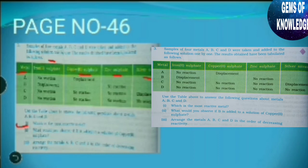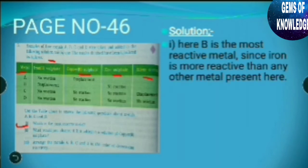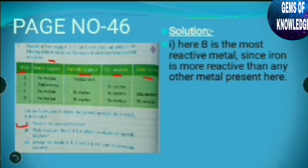The first sub-question: Which is the most reactive metal? The answer is B. Among all four solutions, iron is the most reactive metal. B shows displacement with iron 2 sulfate, which means B is more reactive than iron, making it the most reactive metal among all four. The next sub-question: What would you observe if B is added to copper 2 sulfate? The answer is: displacement reaction will take place.